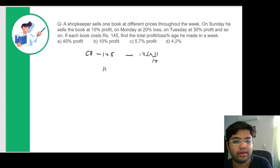On day two, he'll sell 145 into 8 by 10 because 20% loss and so on for different days of the week. So what we'll do is we'll find the values of these, these would give us the SP.